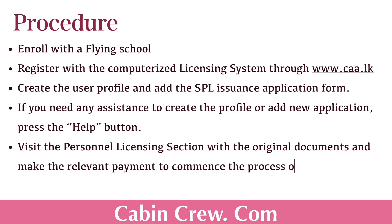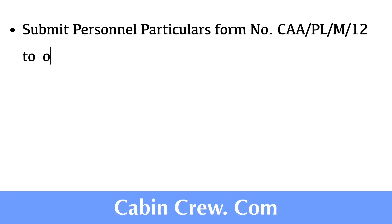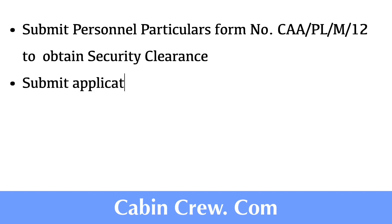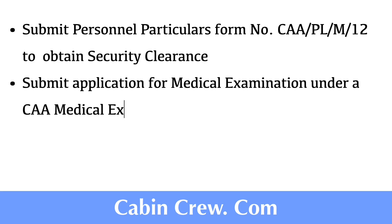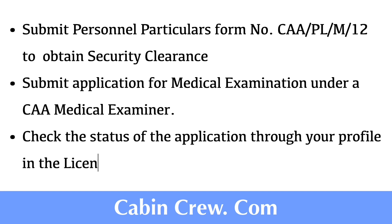Next, you have to visit the personal licensing section with the original documents and make the relevant payments to commence the process of evaluation. Then you have to submit the personal particulars form to obtain the security clearance, and also submit the application for medical clearance. After completing the process, you can check the status of your application through your profile in the licensing system.